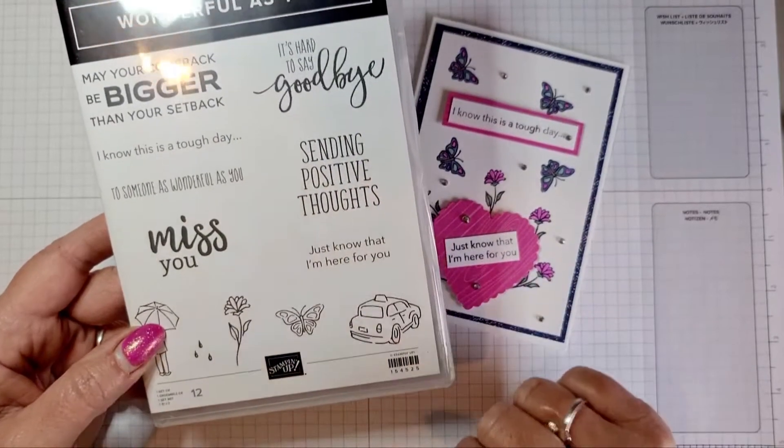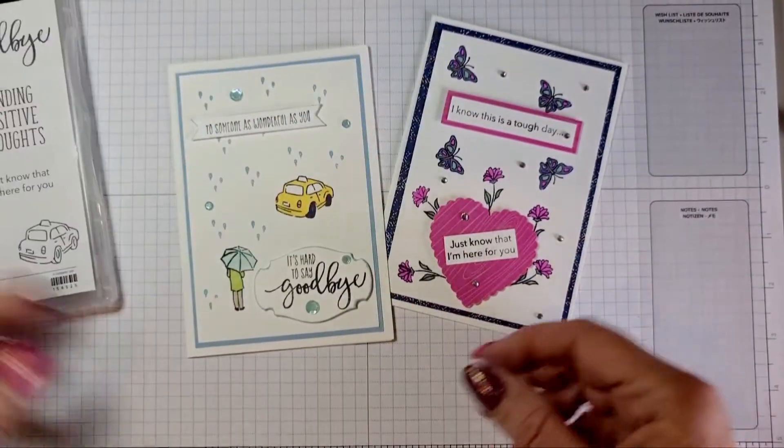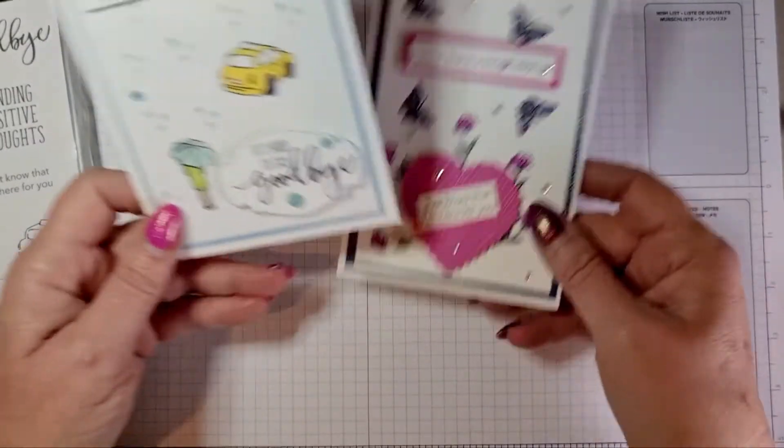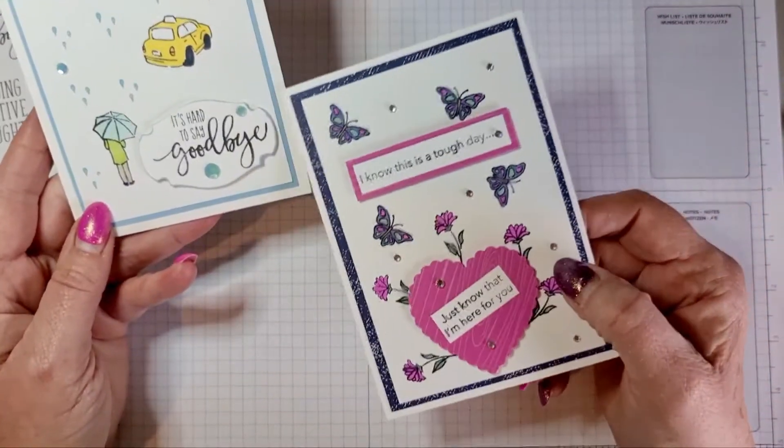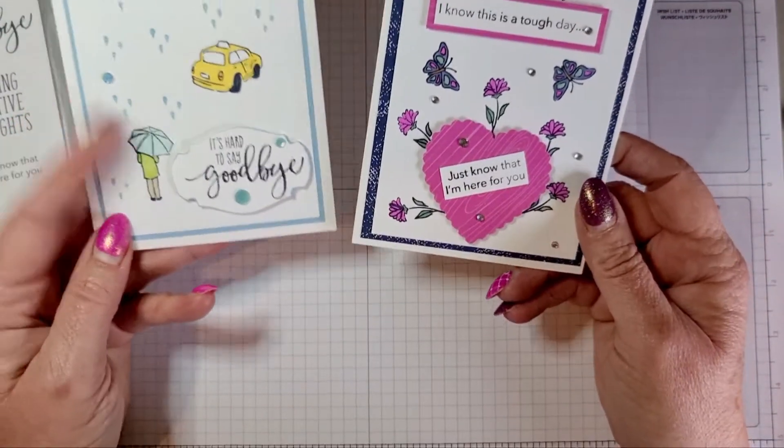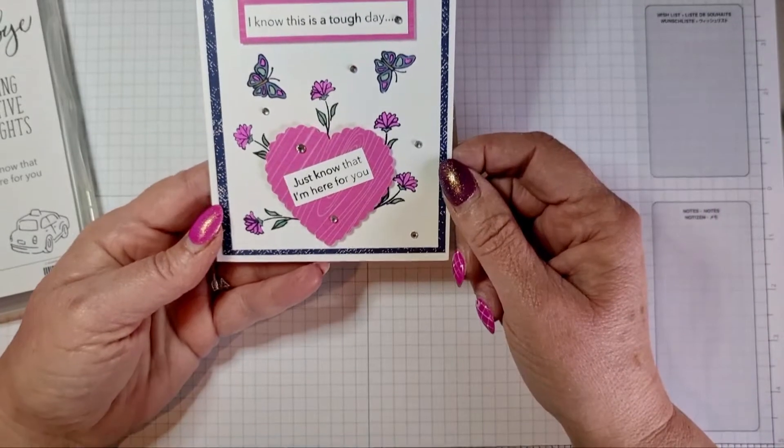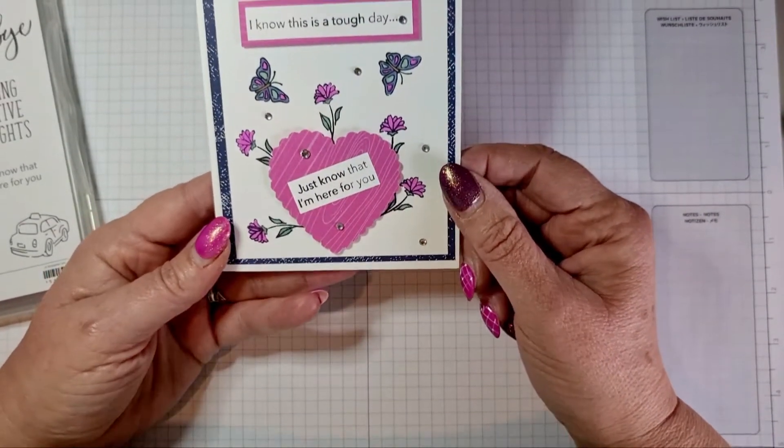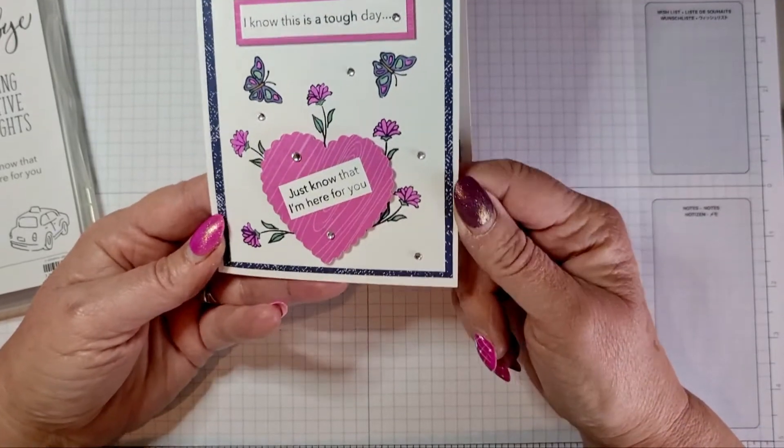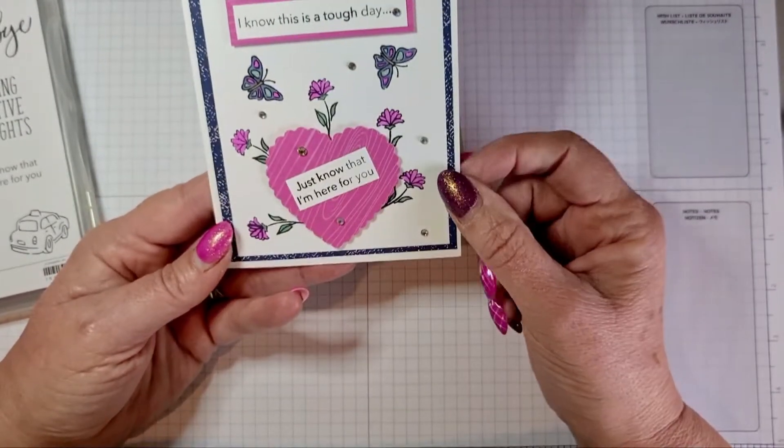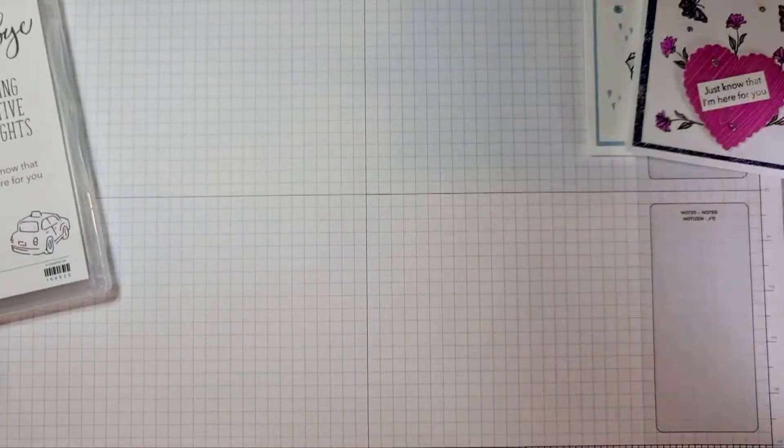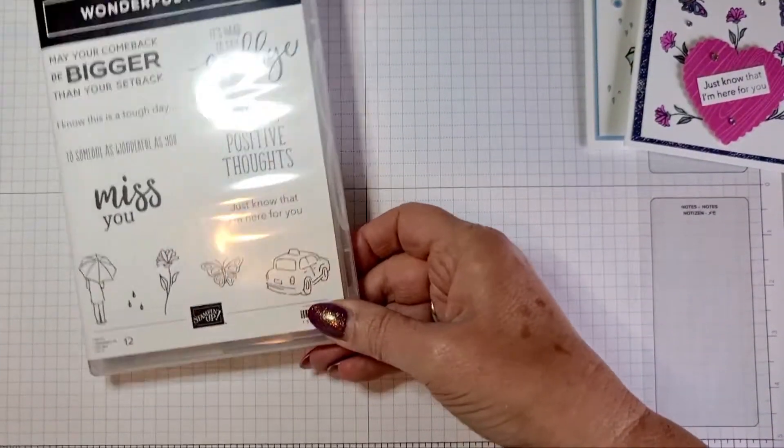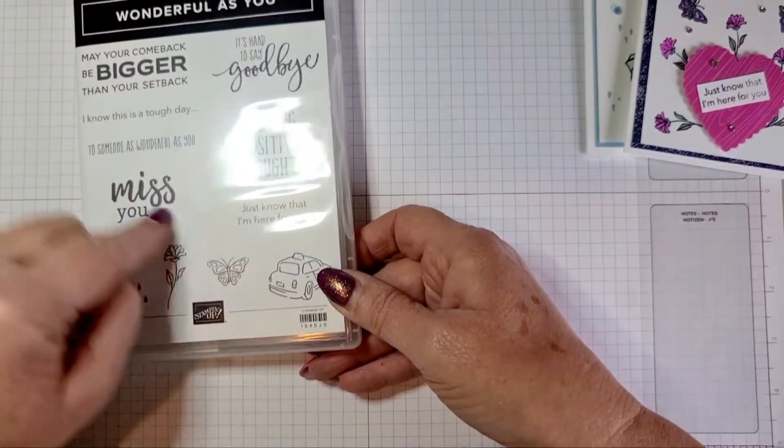These are the two cards I've got. This one says somebody's wonderful as you, it's hard to say goodbye, which would work as a leaving card. And then this one says it's been a tough day, just know that I'm here for you. That's just a nice one you could send to somebody who's having not such a good day. So let's get started.